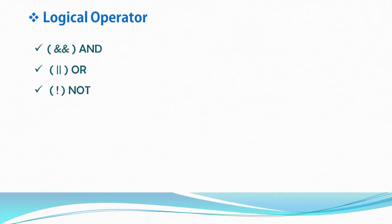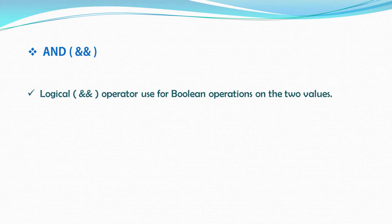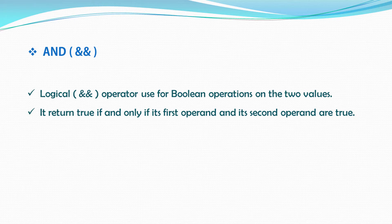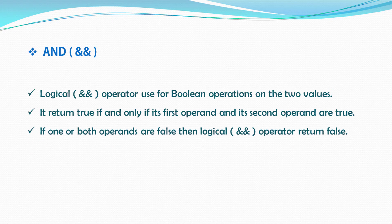Let's start with the first operator, AND. The logical AND operator is used to perform Boolean operations on two values. It returns true if and only if its first operand and its second operand are both true. If one or both operands are false, then the logical AND operator returns false.